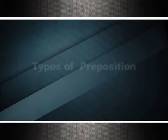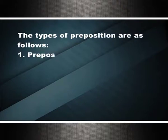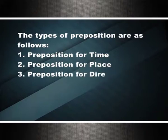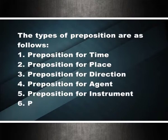The types of preposition are as follows: preposition for time, preposition for place, preposition for direction, preposition for agent, preposition for instrument, and prepositional phrase.